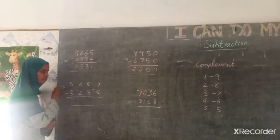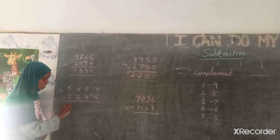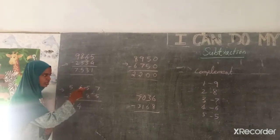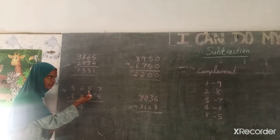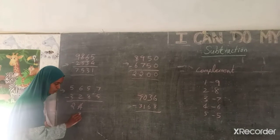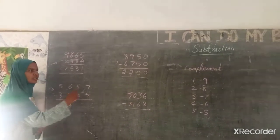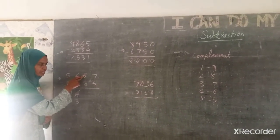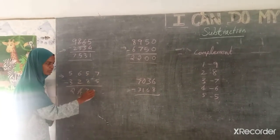Here I will go from the left hand side. 5 minus 3 is 2, 6 minus 2 is 4. Now 5 minus 8 — we can't do that, so I have to reduce the previous number by 1, it becomes 3. And complement of 8 is 2, so 2 plus 5 is 7.